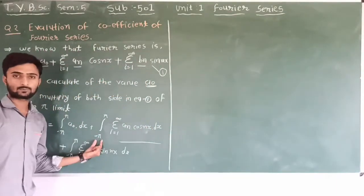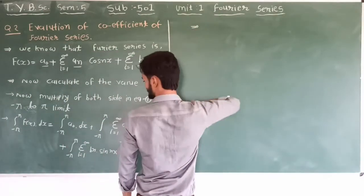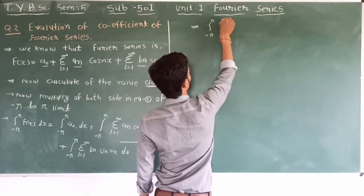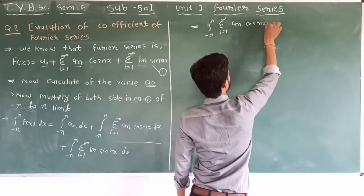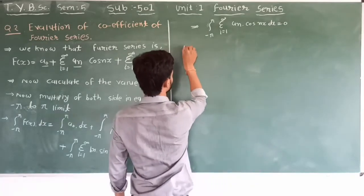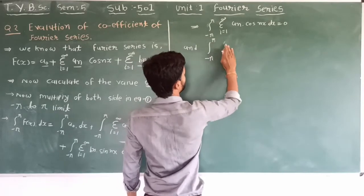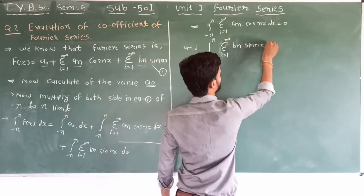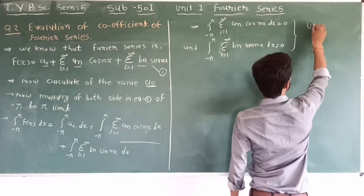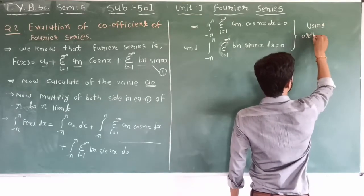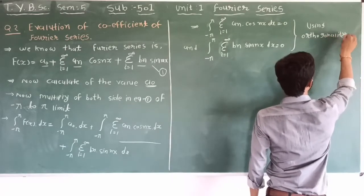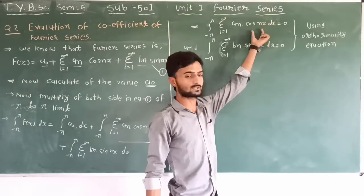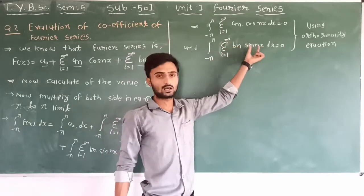The integration from minus pi to pi is equal to zero by orthogonality. The summation of AN cos(nx) integrated from minus pi to pi equals zero, and similarly cos(x) minus cos(x) is zero, and sin(x) and minus sin(x) are also zero.